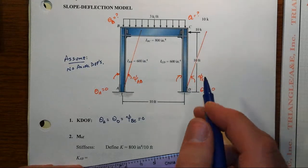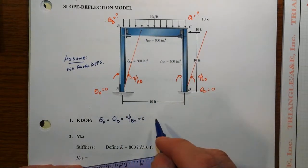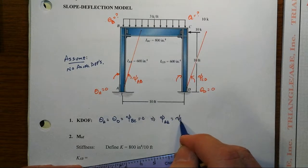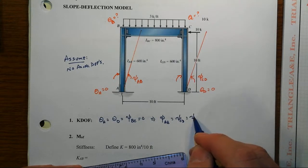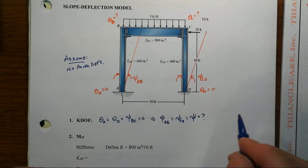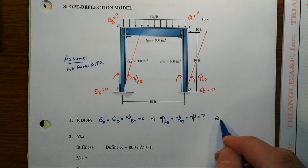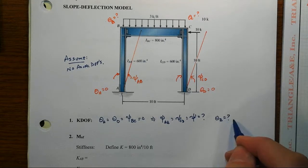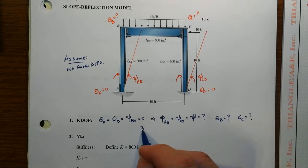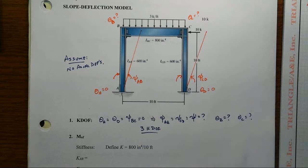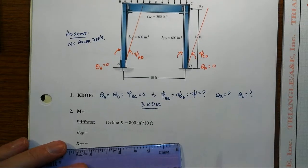And with that as the result that BC can't shorten, what that also tells us is that psi AB is going to equal psi CD. Let's just call that psi, it is an unknown, it's one of our kinematic degrees of freedom, as well as theta B is not known and theta C is not known. So three kinematic degrees of freedom, we're going to need three equations to be able to eventually solve for those.